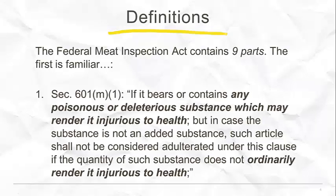We're going to focus on the part that seems very familiar — the standard of poisonous or deleterious substance which may be injurious to health. We're looking again at this distinction between ordinarily injurious and may render injurious. All of that is going to be very familiar. What we then have to do is think about the difference in defining that food product — what is the difference between an FDA food and a USDA FSIS regulated meat product?